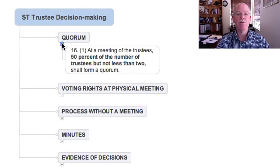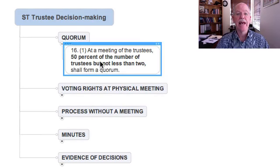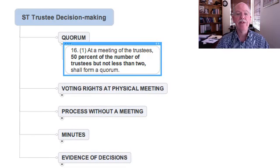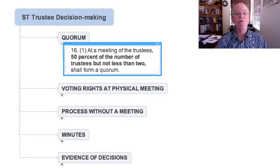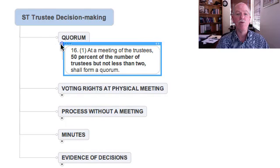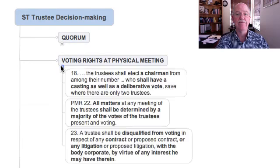Let's first look at the issue of quorum. At a meeting of trustees, in terms of Prescribed Management Rule 16, you need 50% of the number of trustees to be present, and this must not be less than two. Without this number you can't have a meeting. That's the quorum requirement.